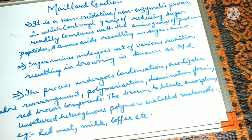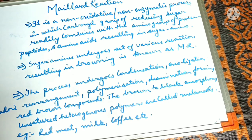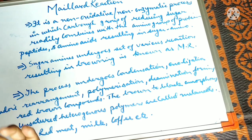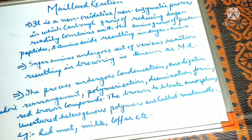The Maillard reaction can be observed in meat, red meat, milk, coffee, and many more items. Even with bread — if you take a bun, apply butter, and toast it, you will observe it changes to a reddish-brown color. That is due to the Maillard reaction, because the bun is carbohydrates and butter contains protein. There is a reaction between the sugar and the amino acid from the protein, forming a brown color.